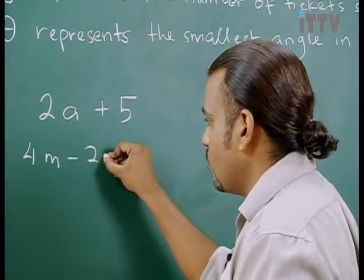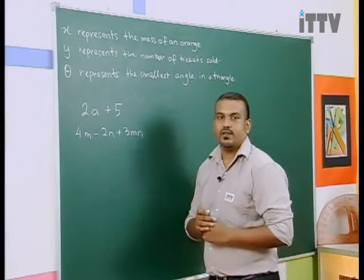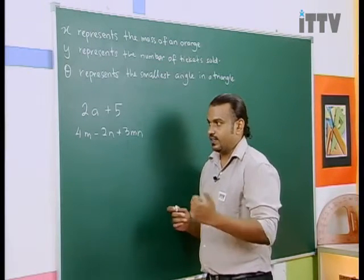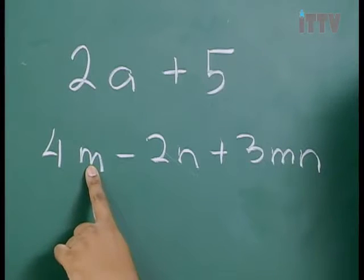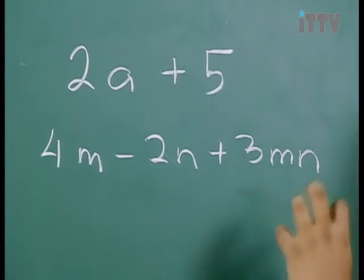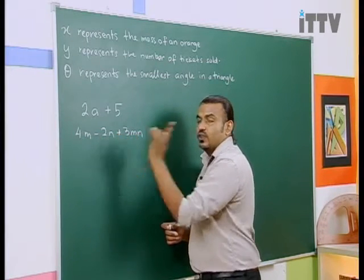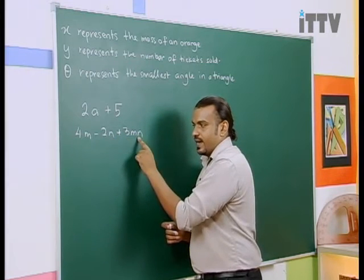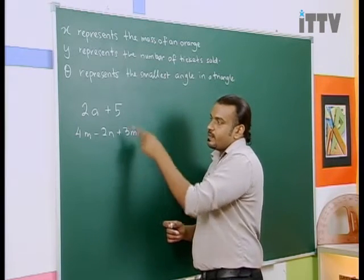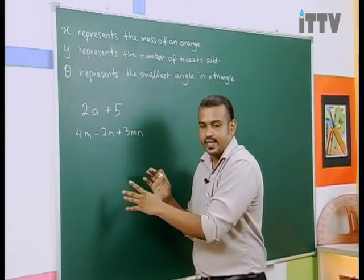4M minus 2N plus 3MN. How many unknowns are there here? Some say there are 2, some say there are 3. So let's see, what is it? We've got alphabet M, N, M, N. Now remember that the type of alphabet refers to 1 unknown. M, M. Both of these are considered as 1 unknown. These 2 are considered as 1 unknown. So how many alphabets do you actually see? How many different types of alphabets do you see? 2 right? Therefore, 2 unknowns. Here you've got 1 unknown. So I think with this, it's kind of easy. You understand it. Let's move on.